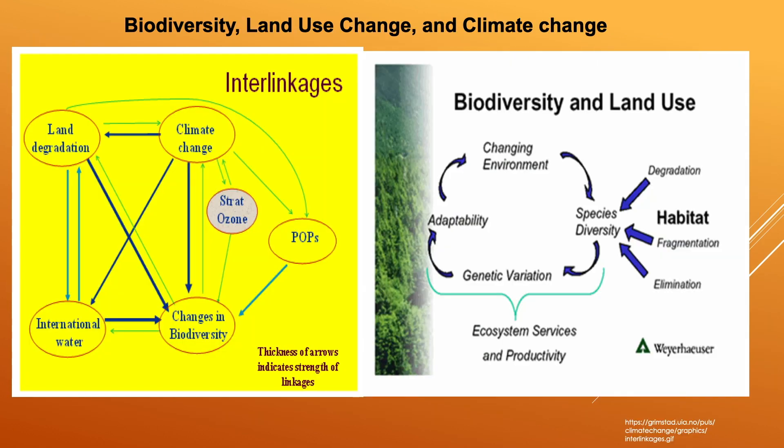This diagram shows biodiversity, land use change and climate change, and how biodiversity and land use have an impact on ecosystem services and productivity.